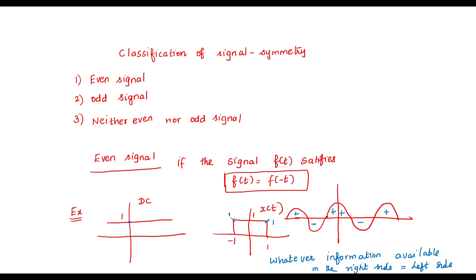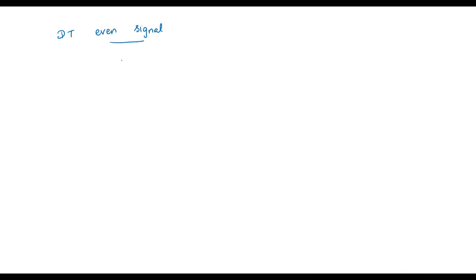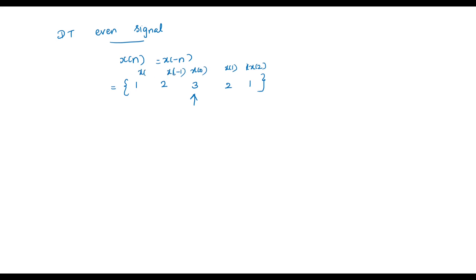So this is the even signal. Next, I am going to explain discrete time even signal. The condition is x of n is equal to x of minus n. See the example: the sequence is 1, 2, 3, 2, 1. So x[0], x[1] and x[2] on the right side; x[-1] and x[-2] on the left side — whatever information available in the right side, the same information is available in the left side. This is the discrete time even signal.